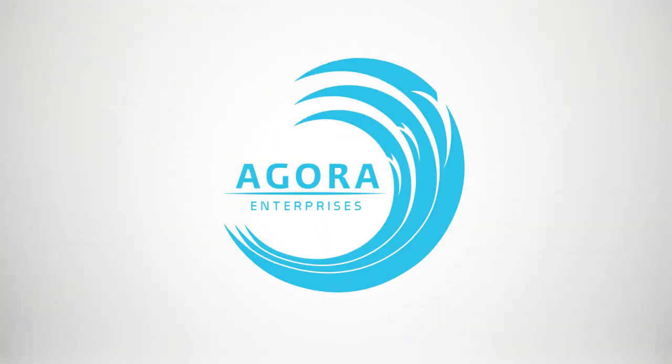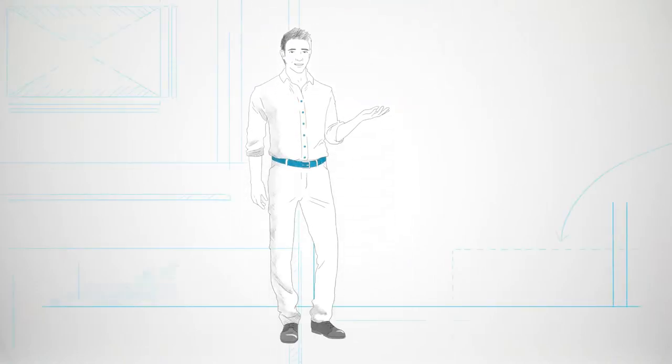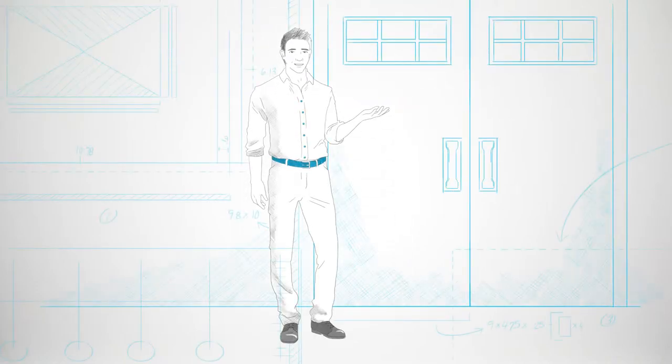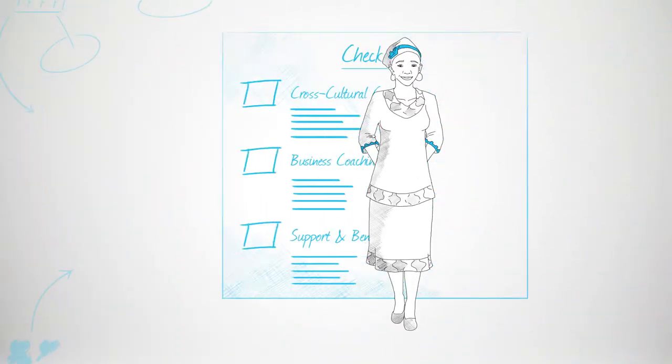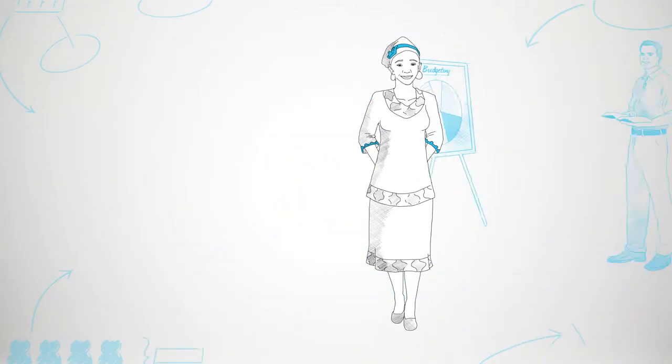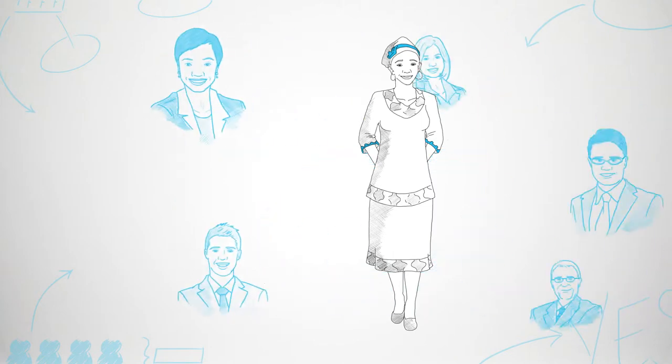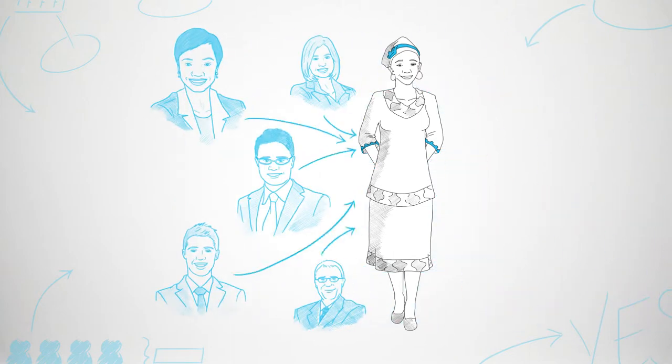That's where Agora comes in. Agora helped U.S. entrepreneur Dan start a business development center in Kenya for people just like Grace. Dan's Center connects Grace to training, a one-on-one coach, resources and investors for her business.